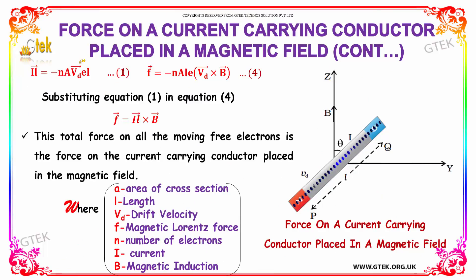This is equation 1 and equation 4. Substituting equation 1 into equation 4, we get the final equation: F vector is equal to I·L vector × B vector. This is the total force on all the moving free electrons — that is, the force on the current carrying conductor placed in the magnetic field.